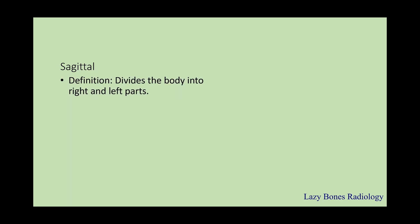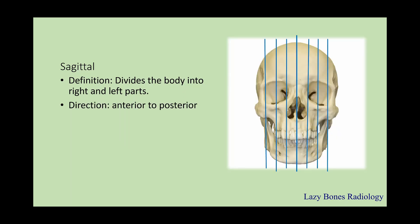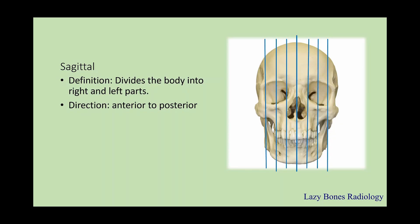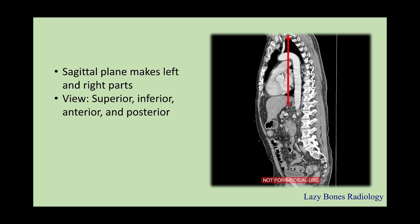The first plane we'll be talking about is the sagittal plane. This plane divides the body into right and left parts — as you can see here in the skull — and they start from anterior to posterior. This allows the body to be visualized in a very unique way. As you make left and right parts with a sagittal plane, we're able to identify structures superiorly, inferiorly, anteriorly, and posteriorly. It is very important that you're able to identify structures when visualizing a sagittal plane.